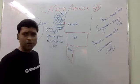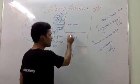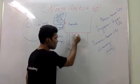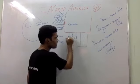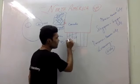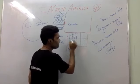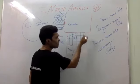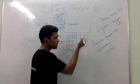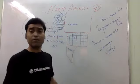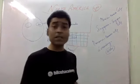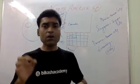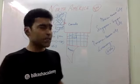We know there are 50 states in the USA — they may not be to scale, but there are 50 states. In the beginning, there were only 13 states. We will talk about this step by step.